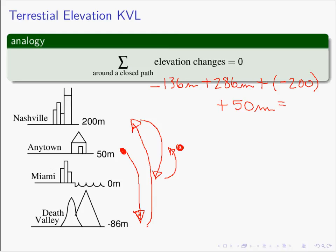We rise up 286 from Death Valley to Nashville. We rise up negative 200 from Nashville to Miami. And we raise the elevation 50 meters from Miami back to Anytown. If we add up all the elevation changes, you will see that the total sum of all the elevation rises must be zero.